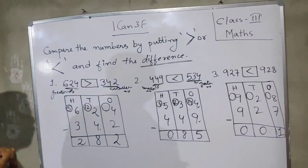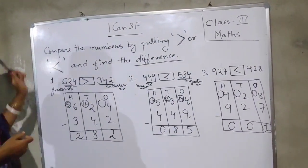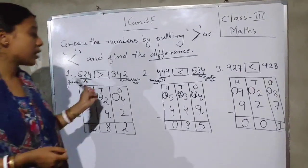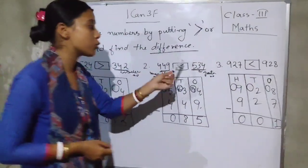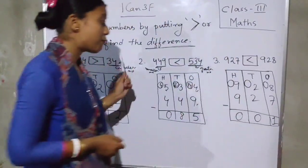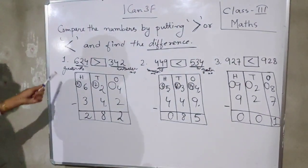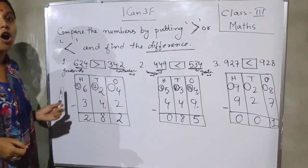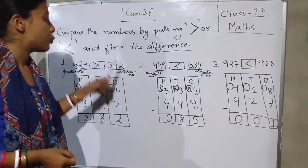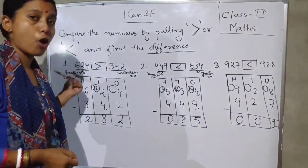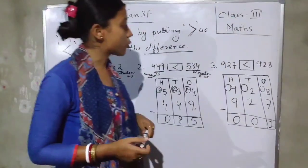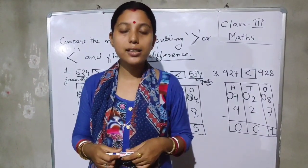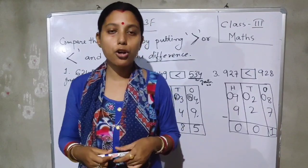All of you have understood. First, compare the two numbers and put the sign. Then to find the difference, subtract the smaller number from the greater number — always remember that. That's all for today, and all of you stay safe at your home.